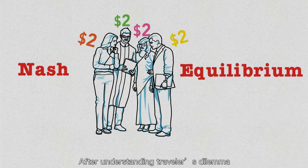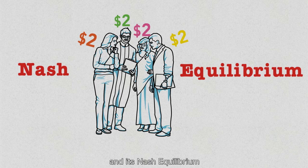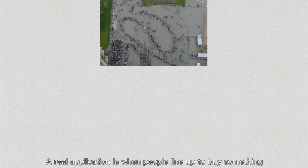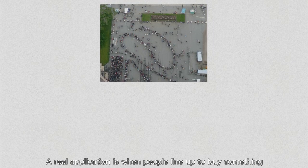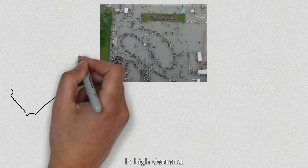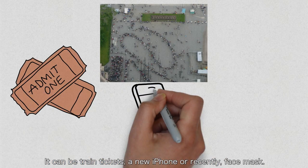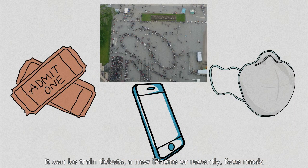After understanding Traveler's Dilemma and its Nash equilibrium, can you think of any application of it in real life? A real application is when people line up to buy something in high demand. It can be train tickets, a new iPhone, or recently face masks.